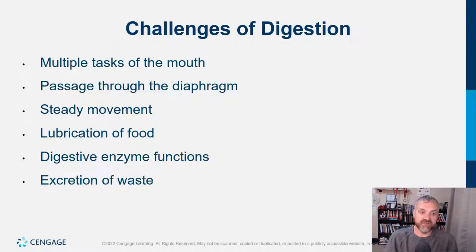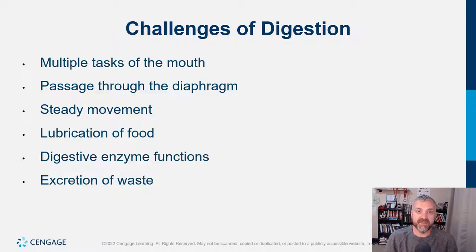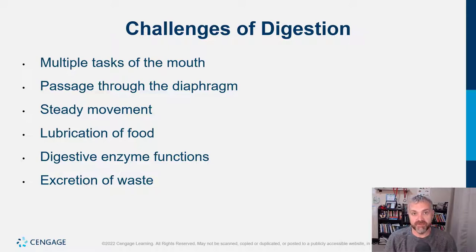Challenges of digestion: the mouth has multiple tasks — it's cutting and grinding and tearing your food, but also lubricating it and exposing your food to your immune system. Passage through the diaphragm can cause issues like hiatal hernias. Movement through the GI tract is very important — that's one of the main functions of fiber, to keep you regular and keep your intestines constantly churning.